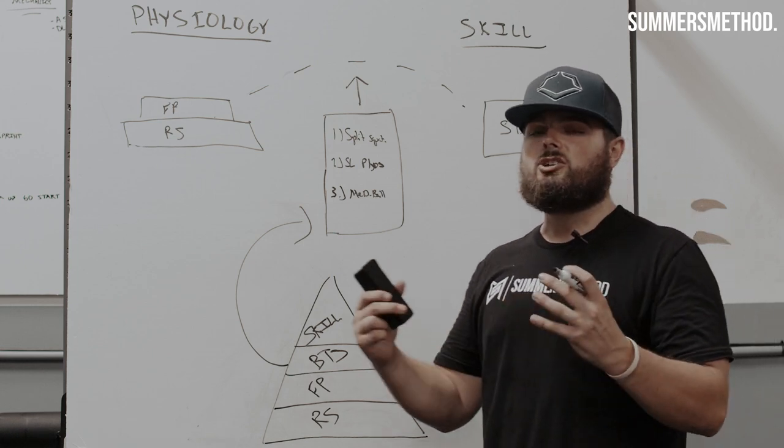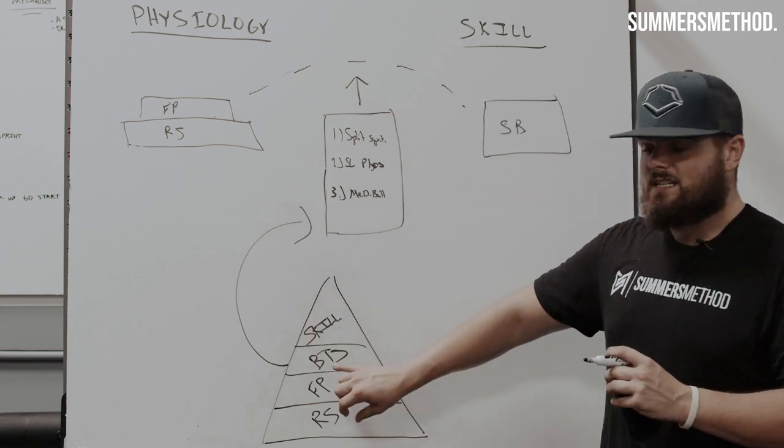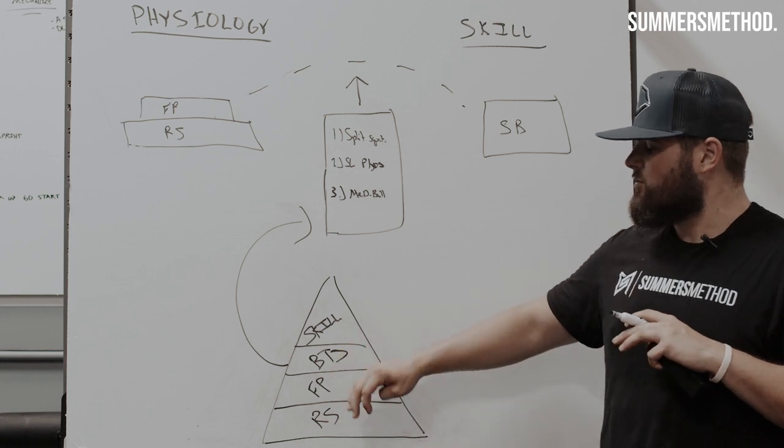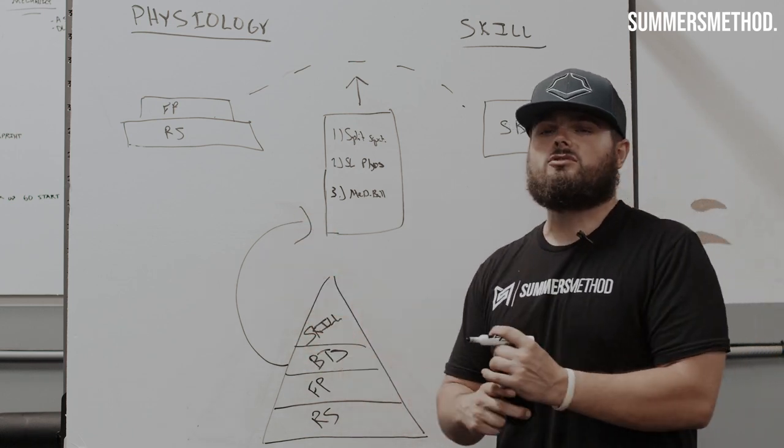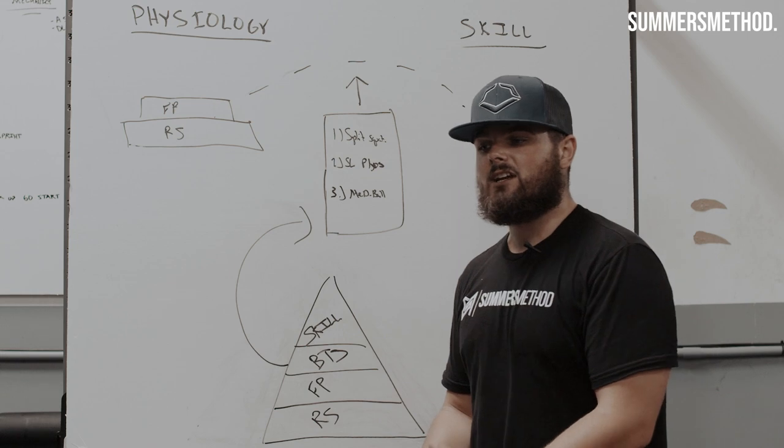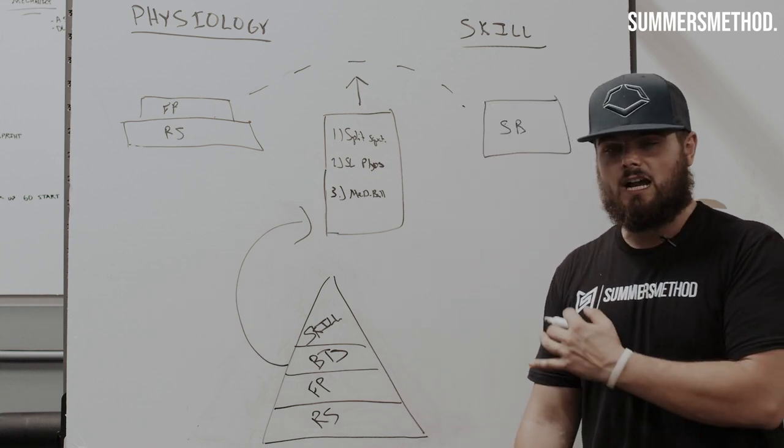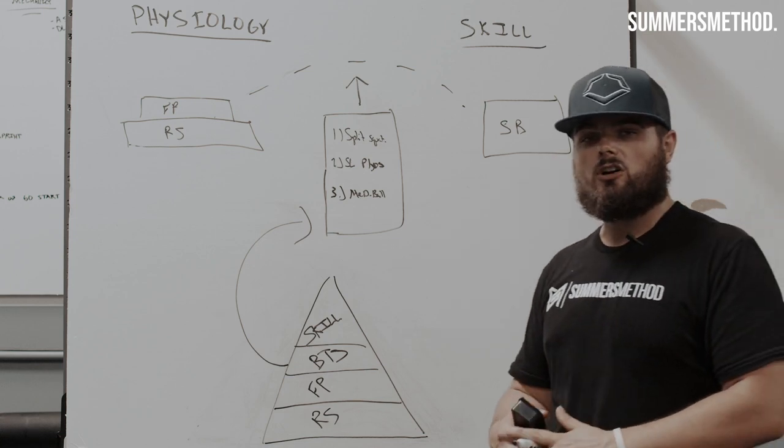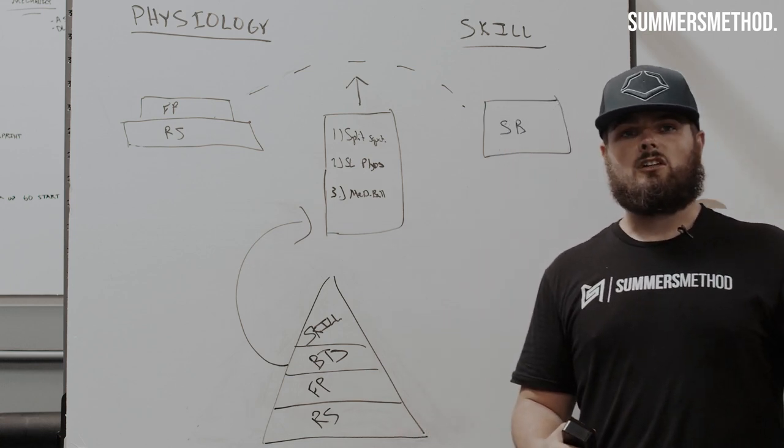So skill, skill truly trumps all. None of this means anything if we build up our relative strength, our force production, if we even bridge it to sport, if you're leaking all of that force in your actual swing biomechanics. So skill truly trumps all in baseball and softball.